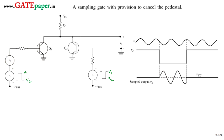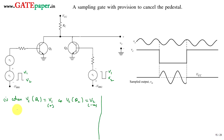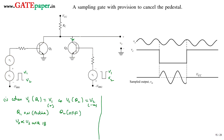First, we will see how the pedestal can be removed. Case 1: when the control voltage of Q1 is at V1, the control voltage of Q2 will be at V2. V2 is negative and V1 is positive, so Q1 comes into the ON condition — that is, the active region — and Q2 comes into the OFF condition, effectively disconnecting that part. Output depends only on source signal Vs, so V0 is proportional to Vs with a 180-degree phase shift.